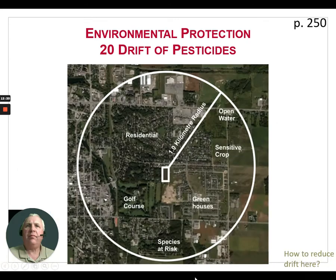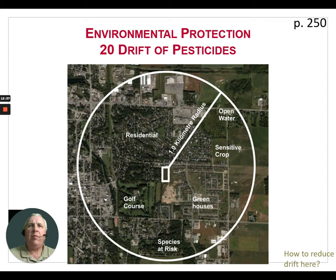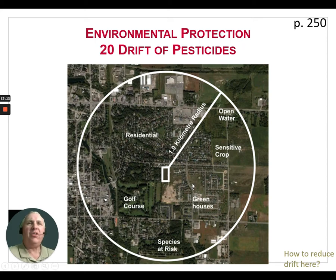This map shows a small field at the center of a one-kilometer radius circle. Within that radius are residential areas with homeowners, open water to the top right, a sensitive crop of grapes, greenhouses to the right, species at risk at the bottom, and a golf course to the lower left. When would the right wind direction exist to spray that field safely? It's almost impossible. That field may have been cheap rent for a reason — it's nearly impossible to find the right conditions without risking harm to others.